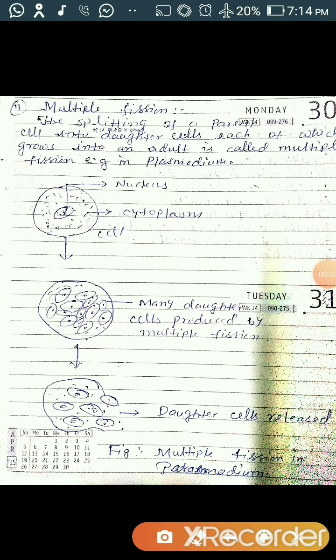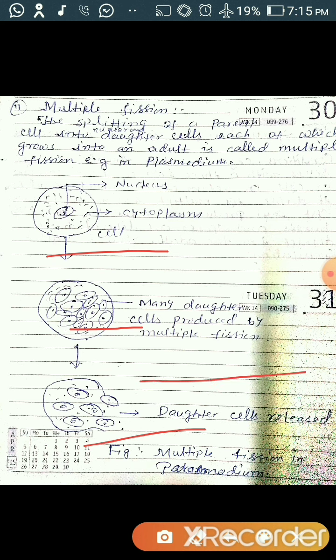Now we will discuss about multiple fission. The splitting of parent cells into numerous daughter cells, each of which grows into an adult, is called multiple fission. An example is plasmodium. You can see in the diagram that this nucleus divides into so many fragments — a single nucleus divides into many fragments. Hence it is known as multiple fission, resulting in the formation of numerous daughter cells.